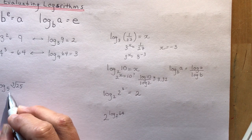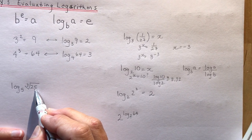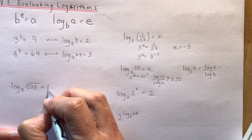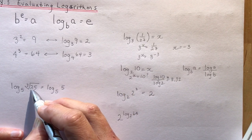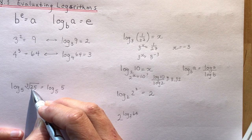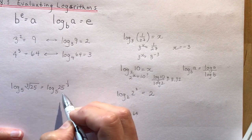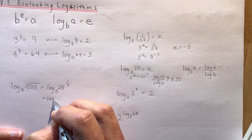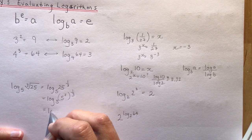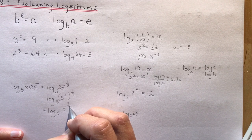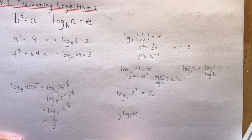Log base 5 of the cube root of 125. The cube root of 125 is the same as log base 5 of 5 to some power. Since cube root means the 1/3 power, and 125 can be written as 5 cubed, I have 5 cubed to the 1/3 power, which is 5 to the 2/3. So log base 5 of 5 to the 2/3 — what do I raise 5 to in order to get 5 to the 2/3? The answer is simply 2/3.